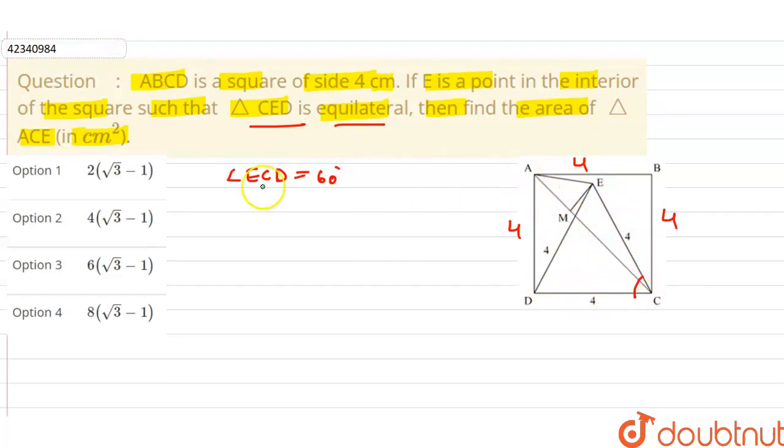This is the diagonal of the square. So how much will this angle be? This angle is 45 degrees because it's 90 degrees. So this is the diagonal of the square. Therefore, angle ACD must be equal to 45 degrees.